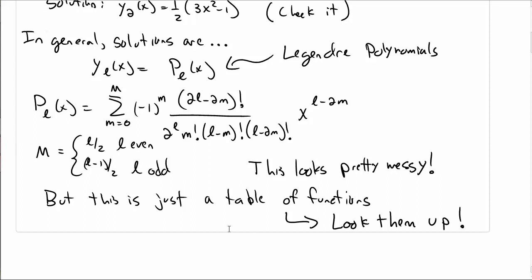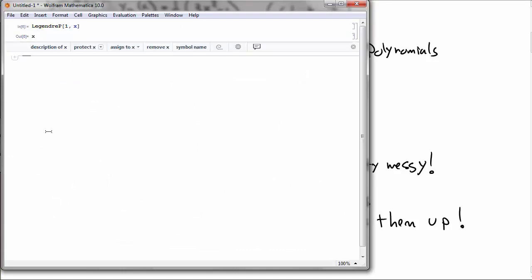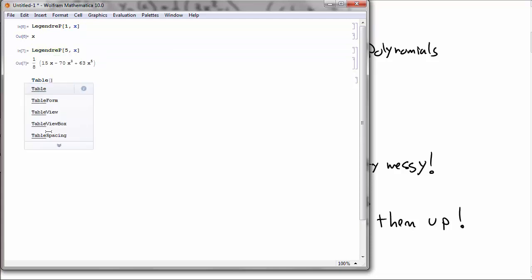So, for instance, you can look this up on Mathematica. In Mathematica, you type in Legendre p of 1 comma x. It gives you the p sub 1. You can do Legendre of 5 comma x. It gives you the fifth Legendre polynomial.